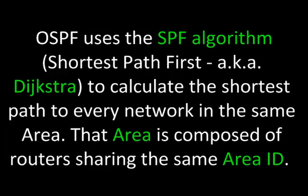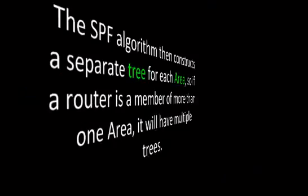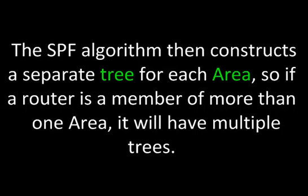OSPF uses the SPF algorithm, or shortest path first, also known as Dijkstra, to calculate the shortest path to every network in the same area. That area is composed of routers sharing the same area ID. The SPF algorithm then constructs a separate tree for each area, so if a router is a member of more than one area, it will have multiple trees.